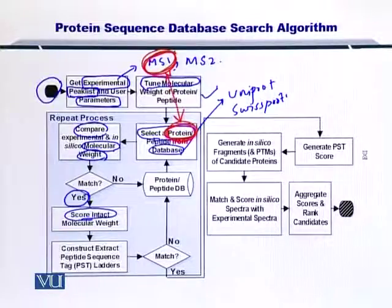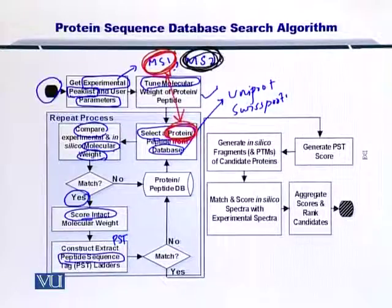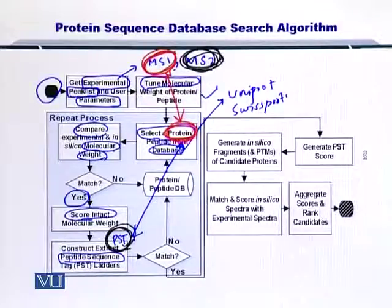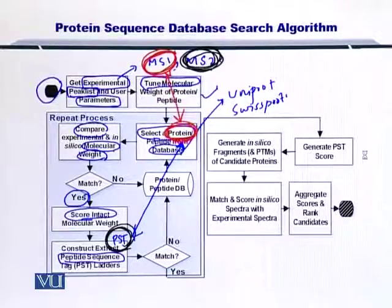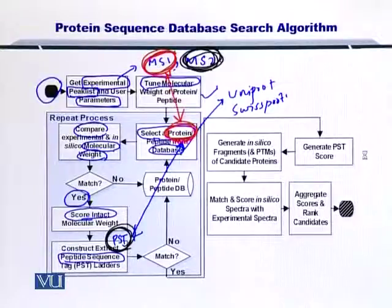So you proceed and construct the peptide sequence tags, or PSTs, from the MS2. Peptide sequence tags are generated from the MS2, and then you search these PSTs with the same protein. If your PSTs exist in this protein sequence, then you can be more sure that the protein matches the in vitro experimental mass and also contains some PSTs obtained in MS2. So you are becoming more and more confident in your matching.